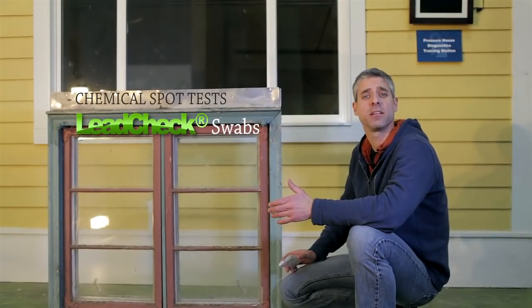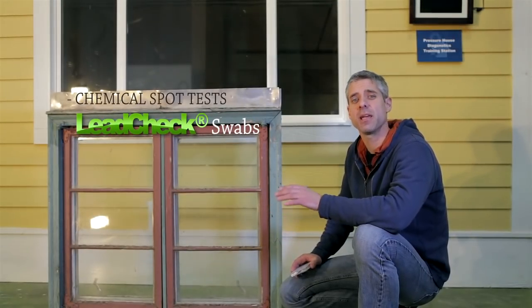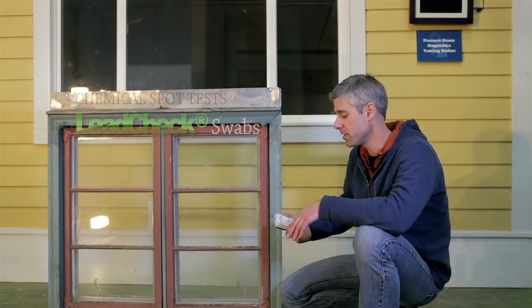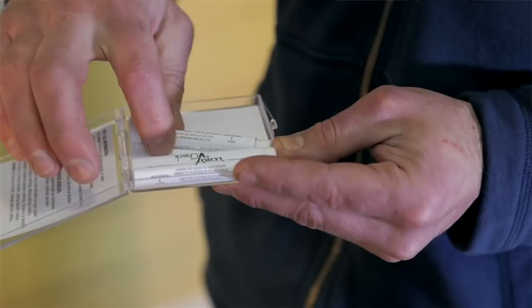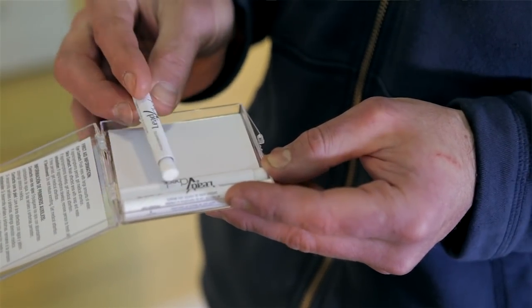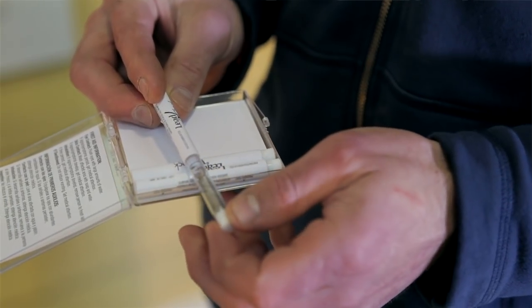The easiest and least expensive method to test for lead is using a chemical spot test, and the one that's been around the longest is lead check. These things are great. You make an incision, you swab the paint, if it's red, there's lead. Let's take a look at how it works.